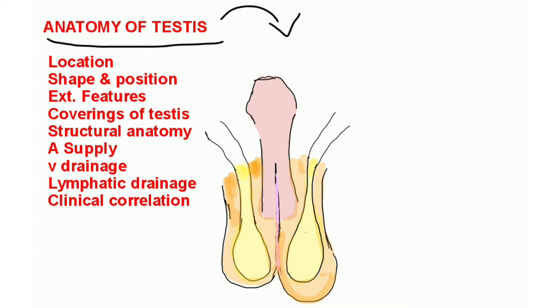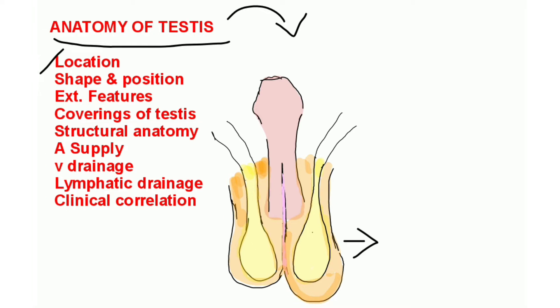It will produce testosterone and sex hormones. It will also produce spermatozoa. Testes is located inside the scrotum, suspended by the spermatic cord.